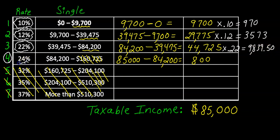And then the last $800, this $800, I have to pay a 24% rate times 0.24. I will multiply that and that gives us $192.